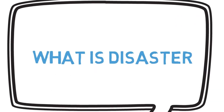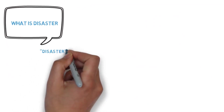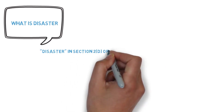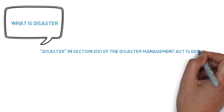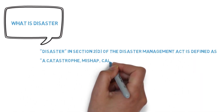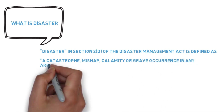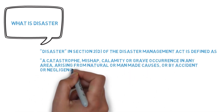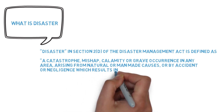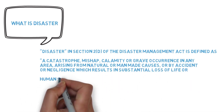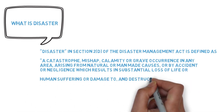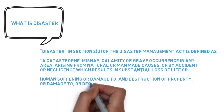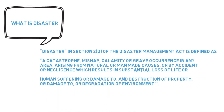You all must be aware about the word disaster. Today let's understand the meaning of this word. Disaster is defined in Section 2, Clause D of the Disaster Management Act. It is defined as a catastrophe, a calamity or grave occurrence in any area arising from natural or man-made causes. It can be by accident, by negligence, which leads to the destruction of property, damage to or degradation of the environment.